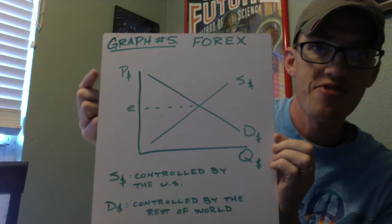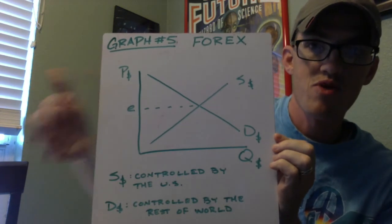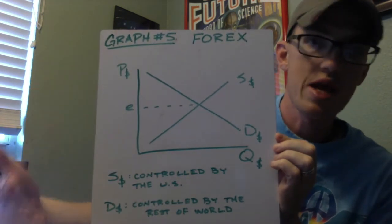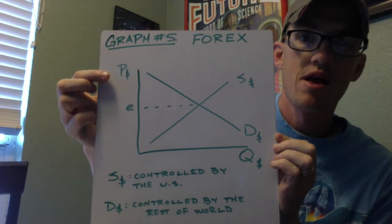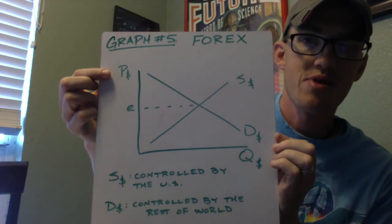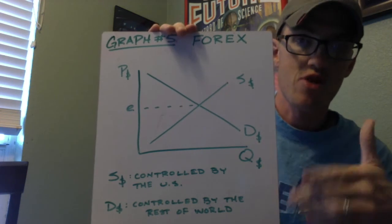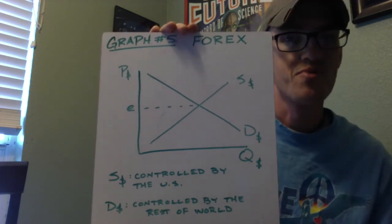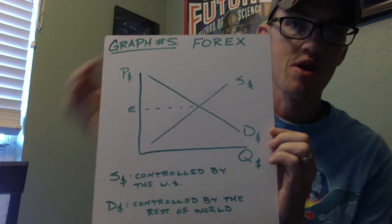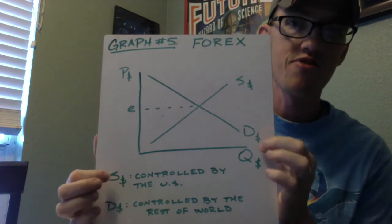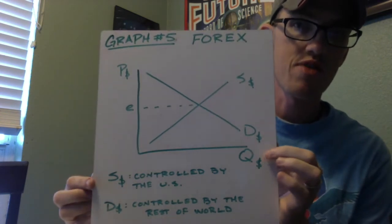So we have a price of that market. We're looking at the dollar market here, it could be any currency. So there's a price, which is how many dollars, in this case dollars, it takes to buy a foreign currency. We'll say euros, for lack of an example. And then there is a quantity for that market as well.